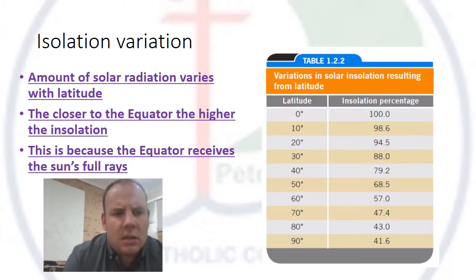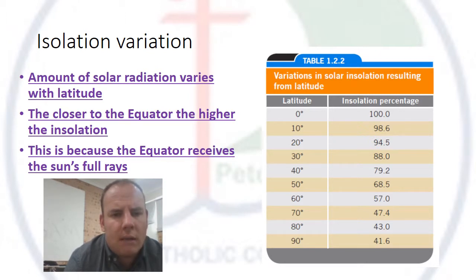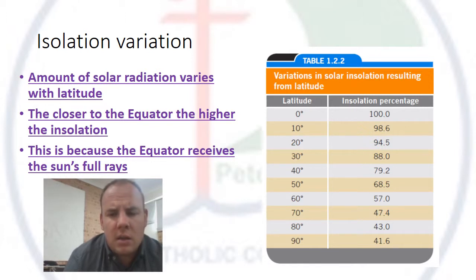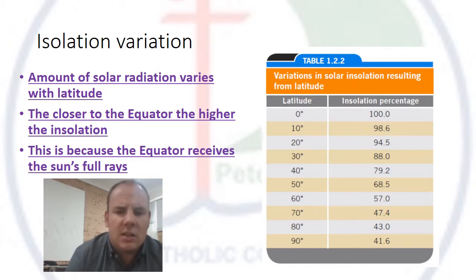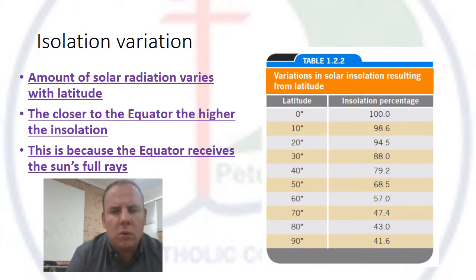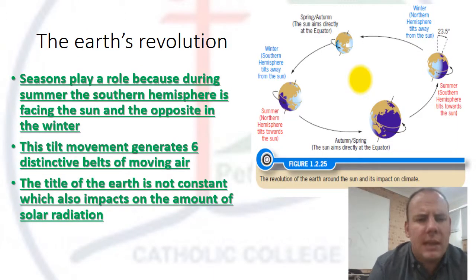Let's look at insolation variation — this is the amount of sunlight that comes into contact with the earth. Obviously, the closer you are to the equator, the higher the insolation is, because the equator receives the sun's full rays. As you can see, every degree of latitude that you change, the percentage decreases. Therefore, traditionally, more sun means hotter climates.